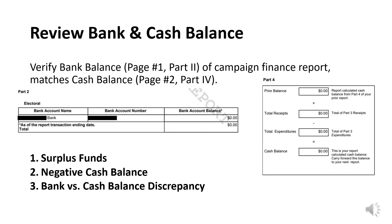In order to close the committee, the bank and cash balance must both be zero. The bank balance is on page one, part two, and needs to be compared to the cash balance on page two, part four of the most recent campaign finance report. If both figures are zero, no further action is required for this step of the closure process. If these two figures are not zero, there are one of three scenarios the committee should be aware of when reviewing bank and cash balances.